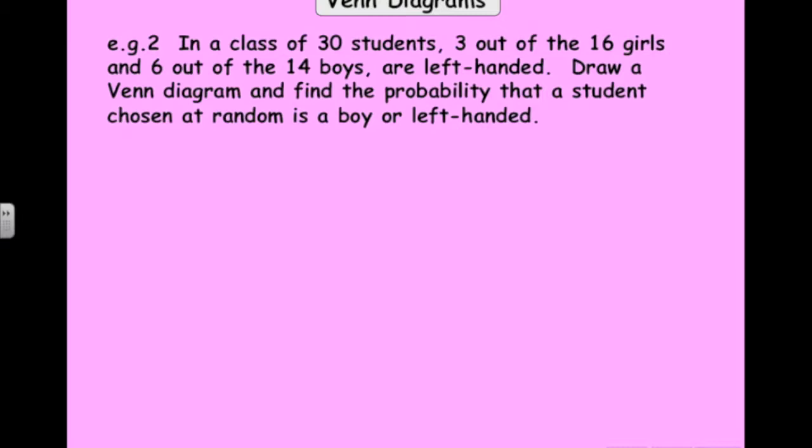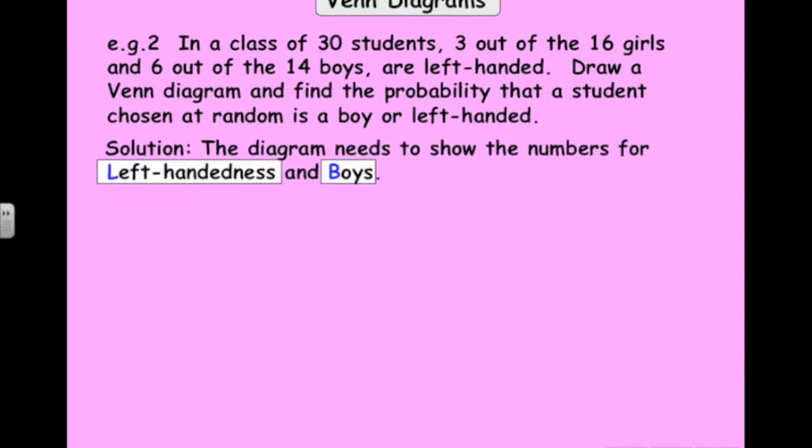Here's an example that uses Venn diagrams to solve this probability problem. You get a class of 30 students. 3 out of the 16 girls and 6 out of the 14 boys are left-handed. We want to know the probability that a student chosen at random is a boy or left-handed. This is tricky and drawing a diagram really helps, a Venn diagram here.